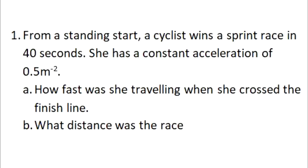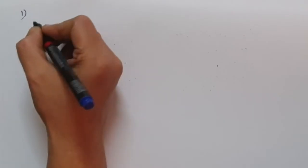First question: from a standing start, a cyclist wins a sprint race in 40 seconds. She has a constant acceleration of 0.5 m/s². Part a: how fast was she travelling when she crossed the finish line? Part b: what distance was the race?